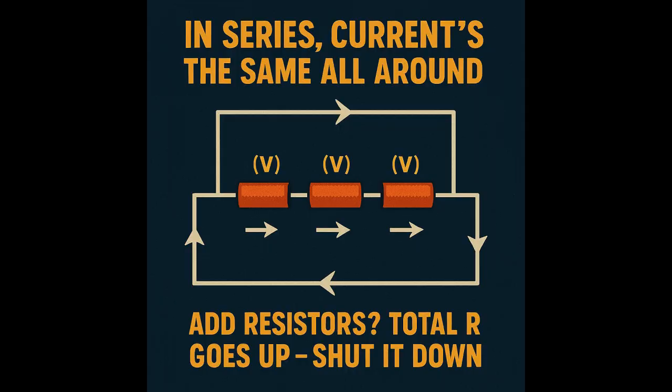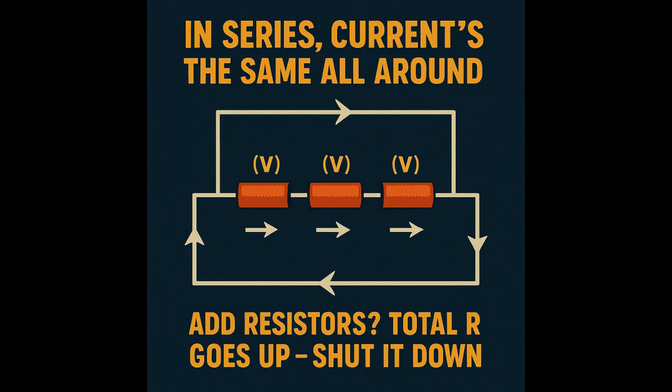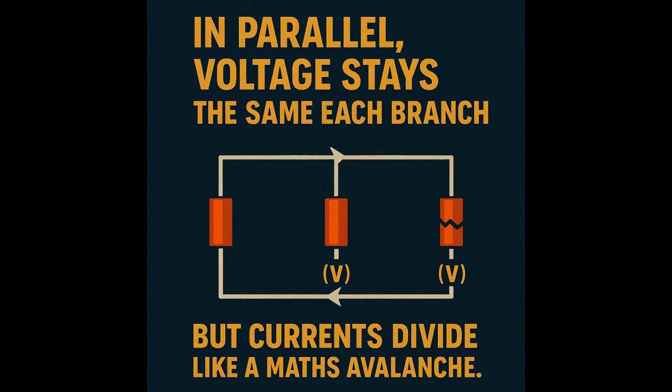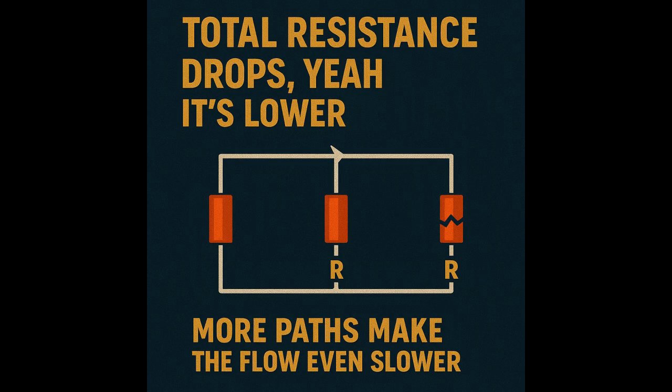In series, current's the same all around — add resistors, total R goes up, voltage splits across each device. One breaks, whole circuit pays the price. In parallel, voltage stays the same each branch, but currents divide like a maths avalanche. Total resistance drops — yeah, it's lower, more paths make the flow even slower. Cells in series.